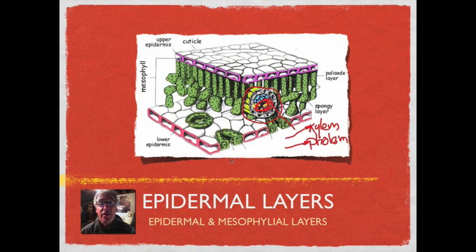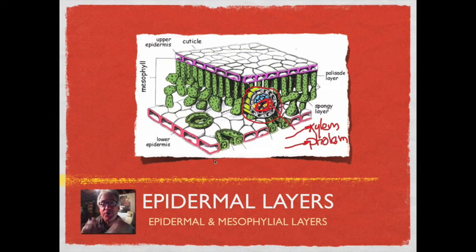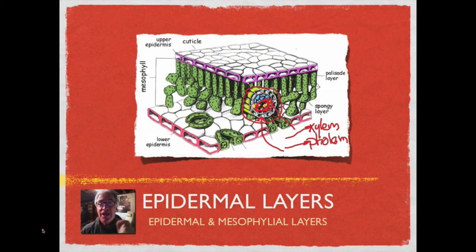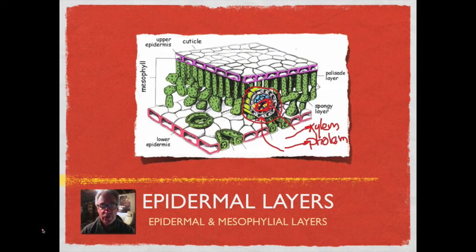The phloem, on the other hand, takes the products that the leaf makes — things like glucose — and as those are combined to make cellulose and longer chains, the phloem needs to move larger molecules. So the phloem vessels are the larger tubes. The phloem moves the sugars and glucose to the rest of the cells throughout the plant.